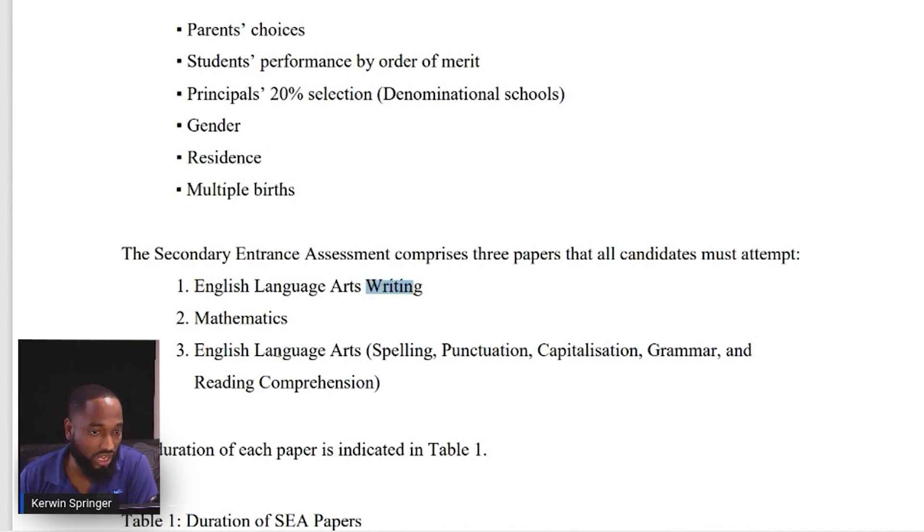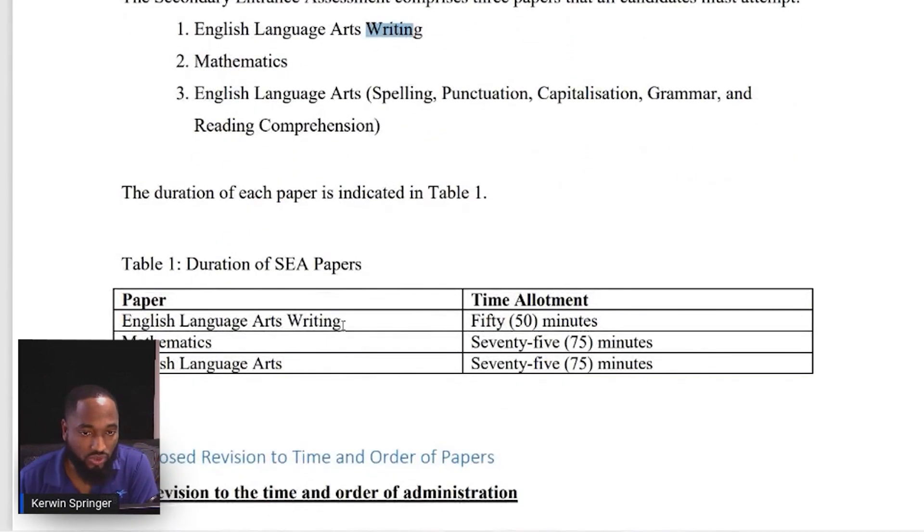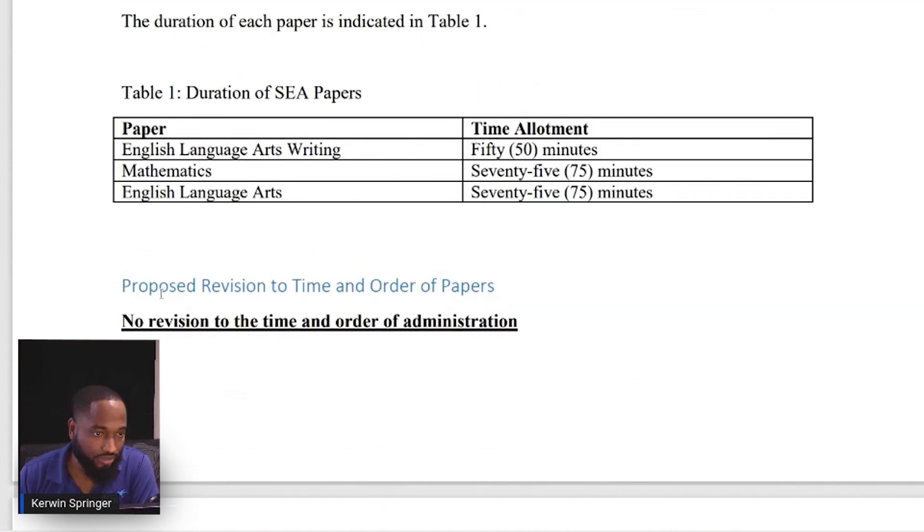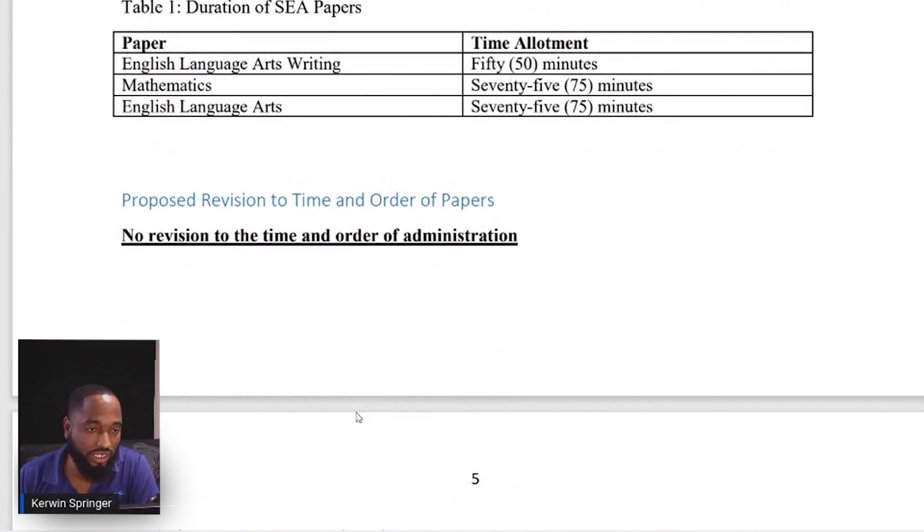The exam includes spelling, punctuation, capitalization, grammar, and reading comprehension. The exam time is 50 minutes for the writing part, 75 minutes for math, and 75 minutes for English. For this video I'll focus on the changes that occur in math. There's been no revision in the time and the order for the papers is the same. The exam is actually going to occur on June the 10th.